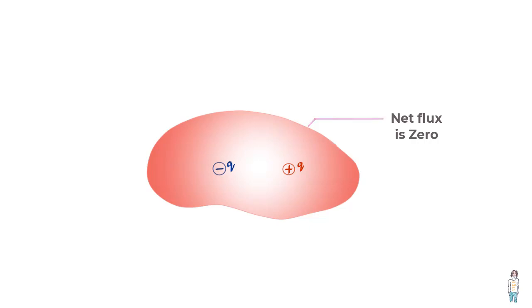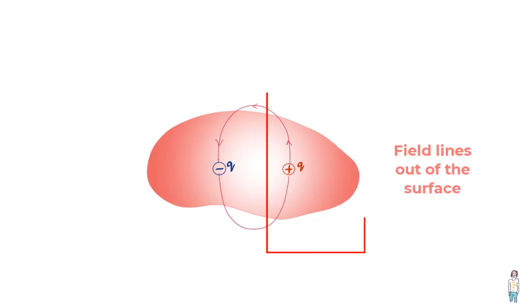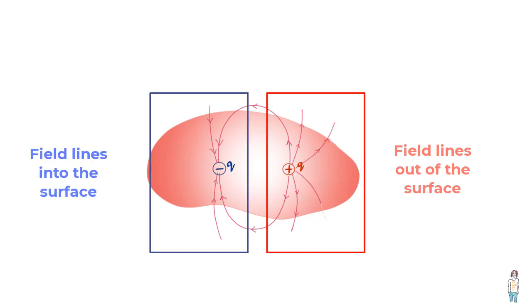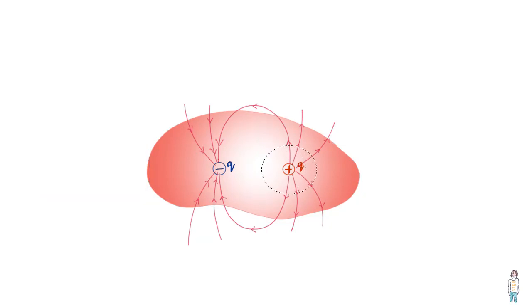We could have also said that the number of field lines going out of the surface due to charge plus Q is the same as the number of field lines coming into the surface due to charge minus Q, and hence the net flux is zero. But if you were to consider this as a Gaussian surface, we would say that the net flux through this surface is plus Q upon epsilon naught because this surface encloses charge plus Q only.